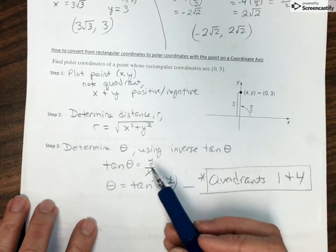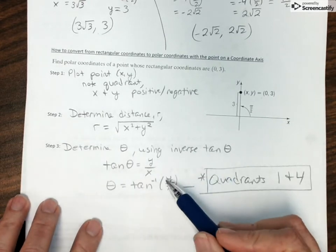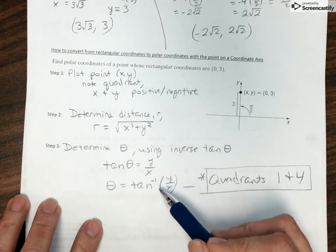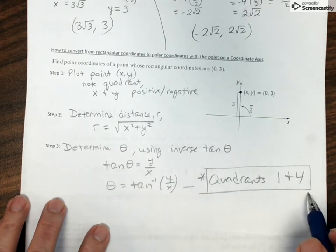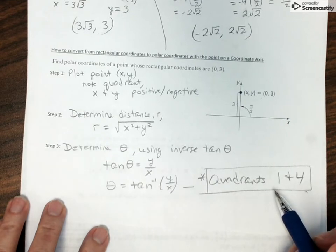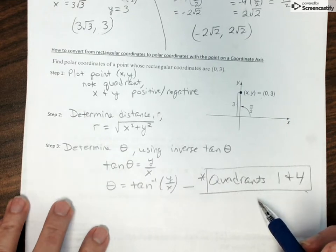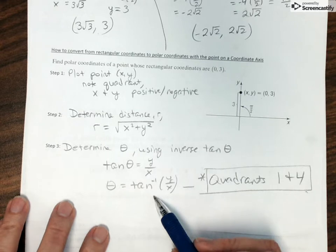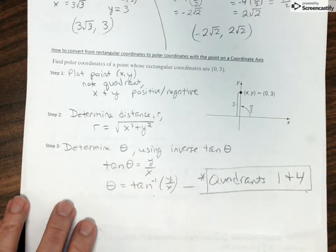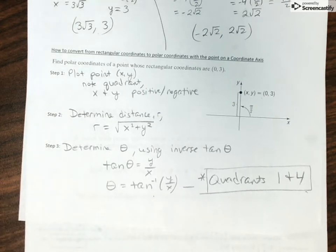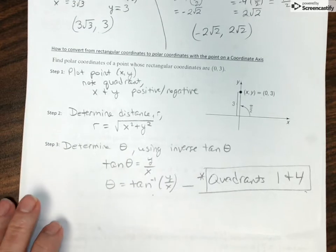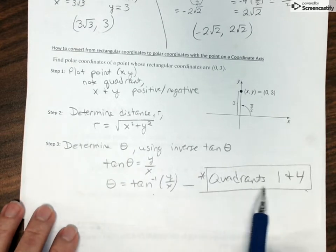As we finish up determining theta, one thing to keep in mind is that when we take the tangent inverse, that gives us only things in quadrants 1 and 4. So if we needed to find an angle that was in quadrant 2, we might want to use cosine inverse instead of tangent inverse. Cosine would give us the x divided by r, and we would just do our cosine inverse. So we need to keep track of which quadrants our inverse trig functions work in.